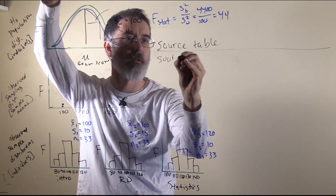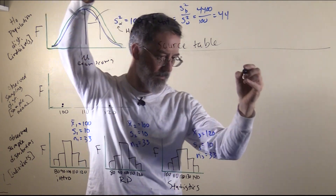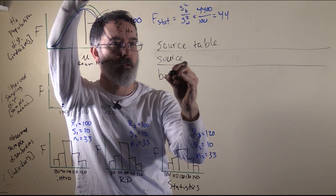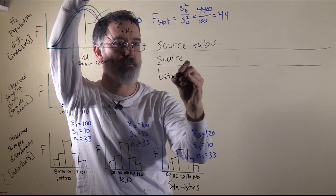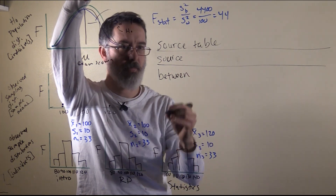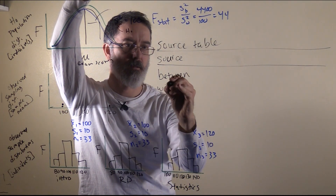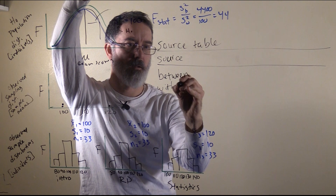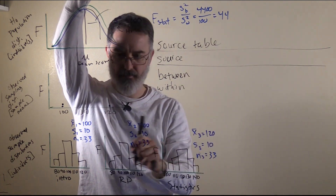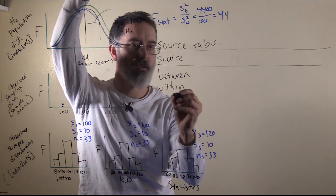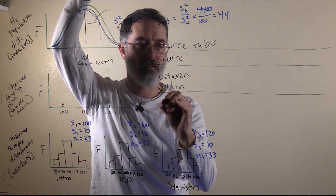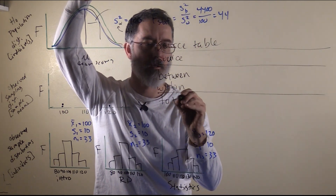We have a column that we will call source. One source is between the group, so that is the means here, and another source is within the group, so that is like this 10, and this 10, and this 10. Those are the two sources, but we are also going to have a total.